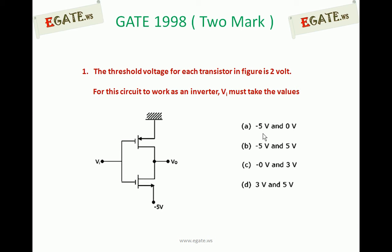Look at the diagram. The threshold voltage for each transistor in the figure is 2 volts. For this circuit to work as an inverter, VI must take the values: A. minus 5 volts and 0 volts, B. minus 5 volts and plus 5 volts, C. 0 volts and 3 volts, D. 3 volts and 5 volts.